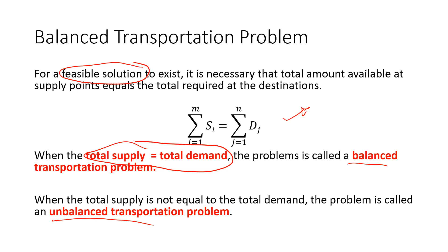When the total supply is not equal to the total demand, the problem is called an unbalanced transportation problem. Before you solve a transportation problem, you want to make sure that the problem is balanced — check whether the total supply equals the total demand for the given problem.